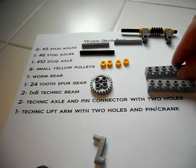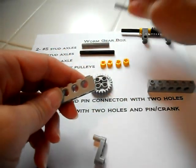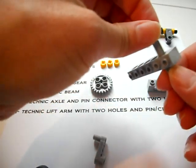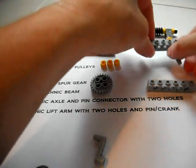Okay, let's start building the remaining portion. Take a 1x6 Technic beam, a No. 5 stud axle, insert it in the farthest hole, use a yellow pulley, cap it. Then I'm going to set this down for a moment.